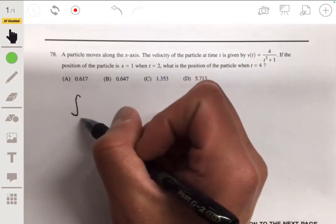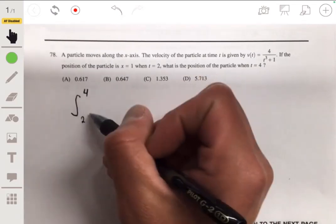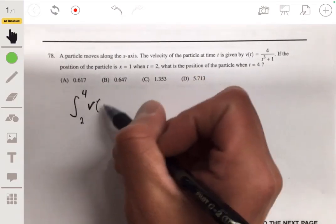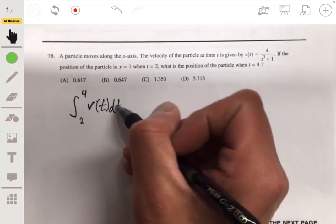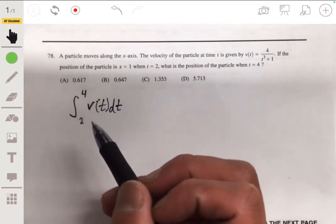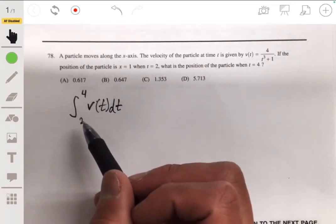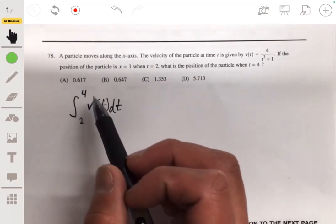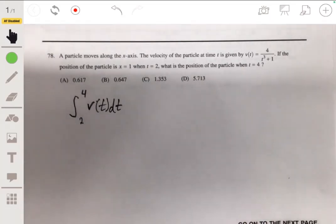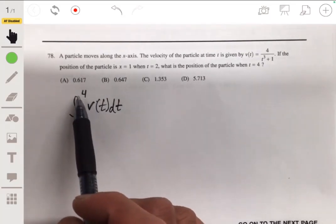From two to four, integrate v(t) from two to four. That's going to tell you from time two to time four where it ended up, how it traveled and where it ended up at time t equals four. So we're given velocity.